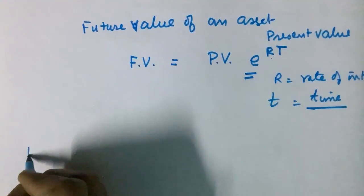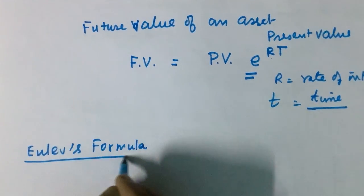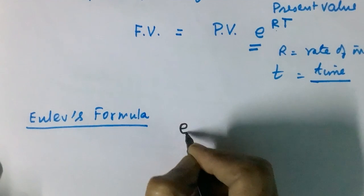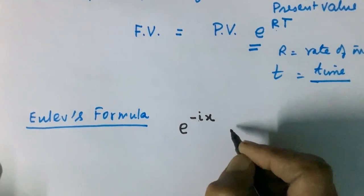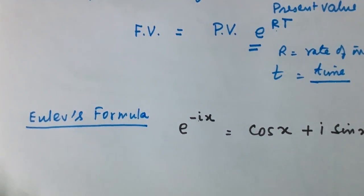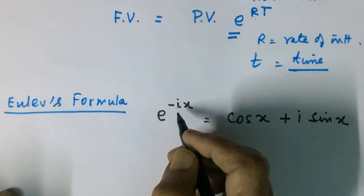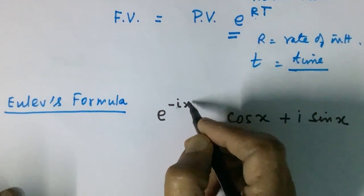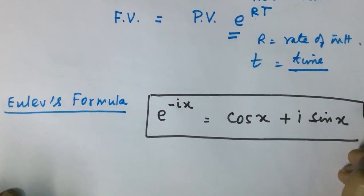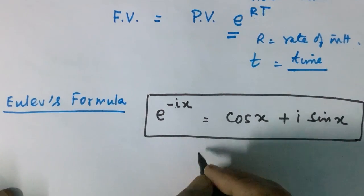Now we come to Euler's formula. Euler's formula is given by: e raised to the power ix equals cos x plus i sin x, where i is an imaginary number and x is any real number. This expression is known as Euler's formula. If we take x equal to pi, we get a special case.